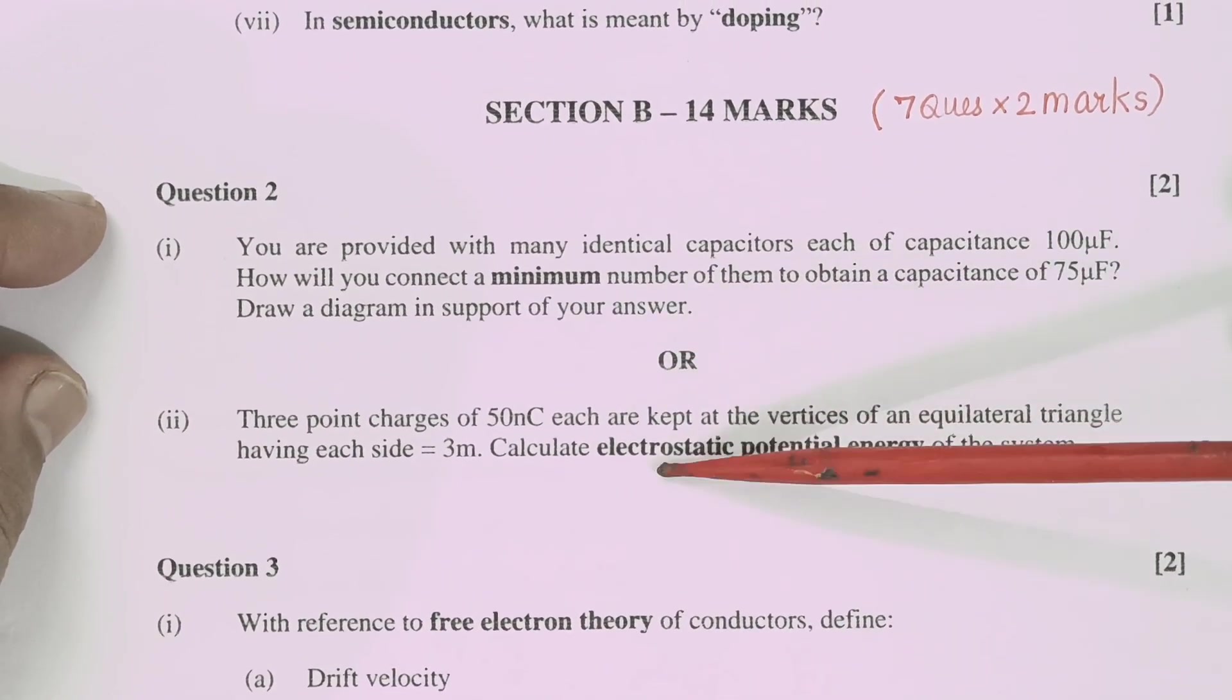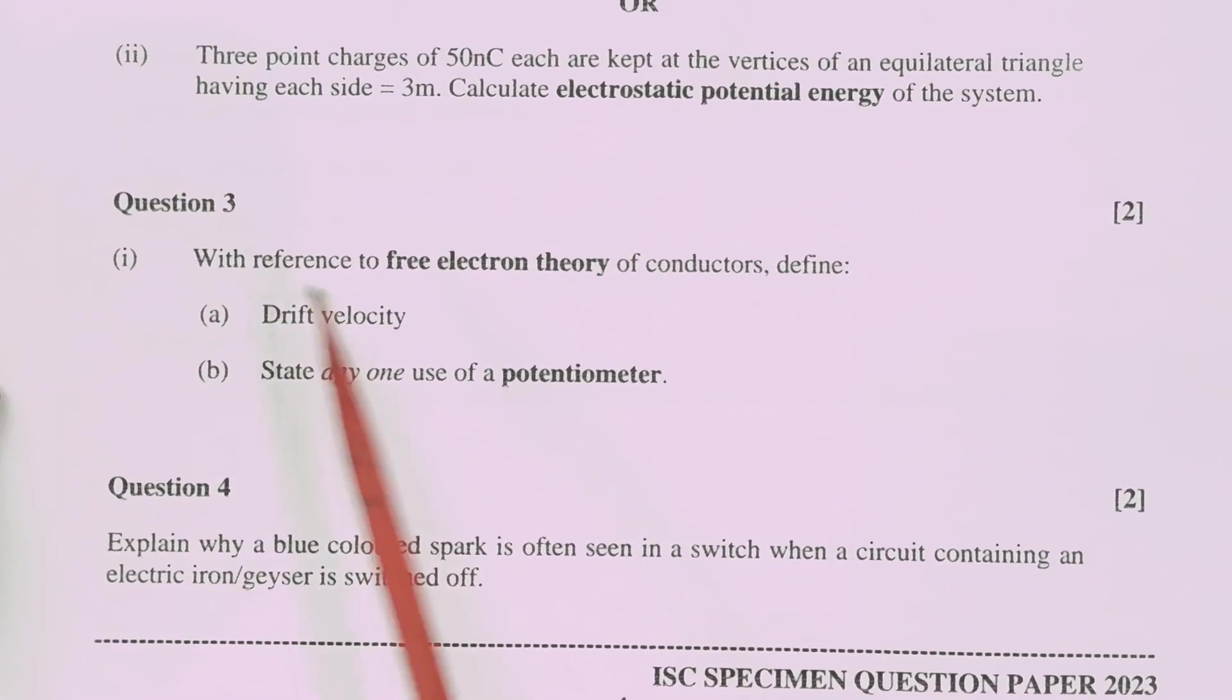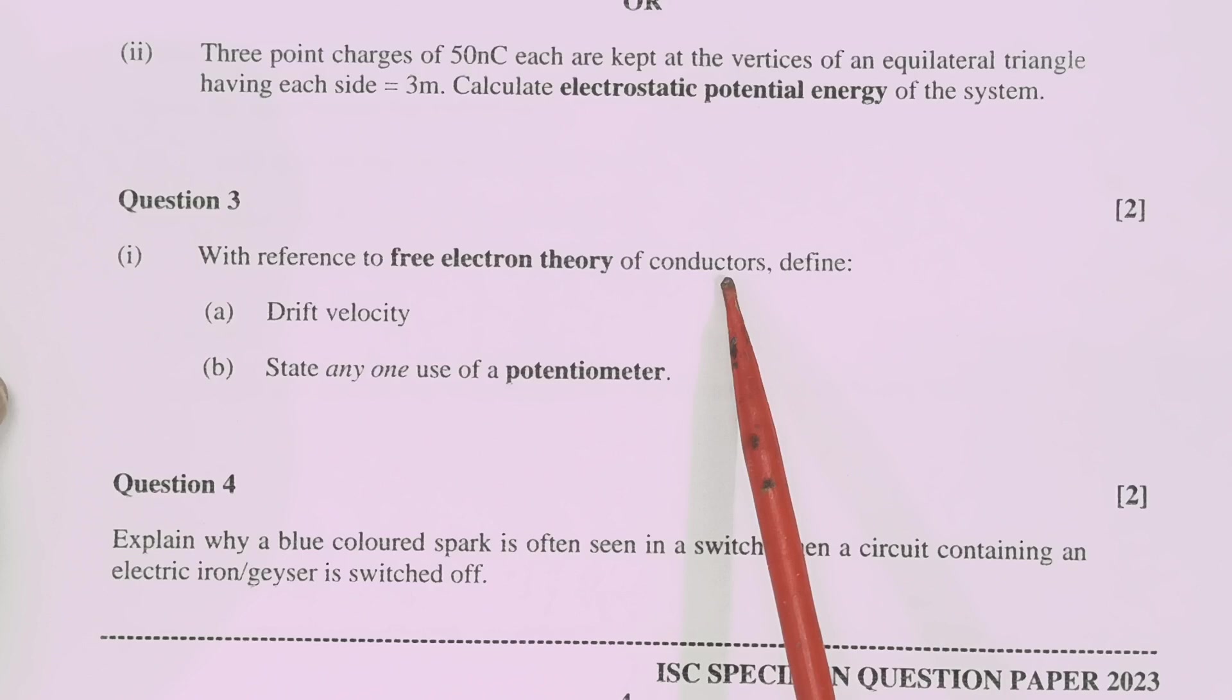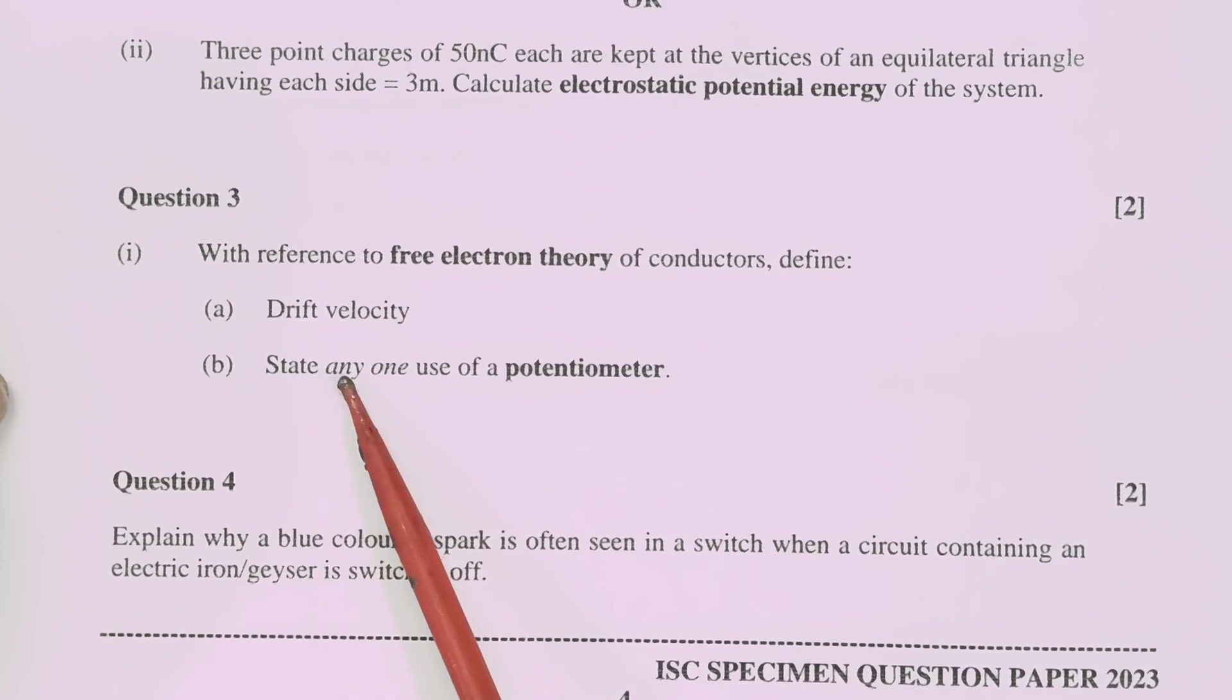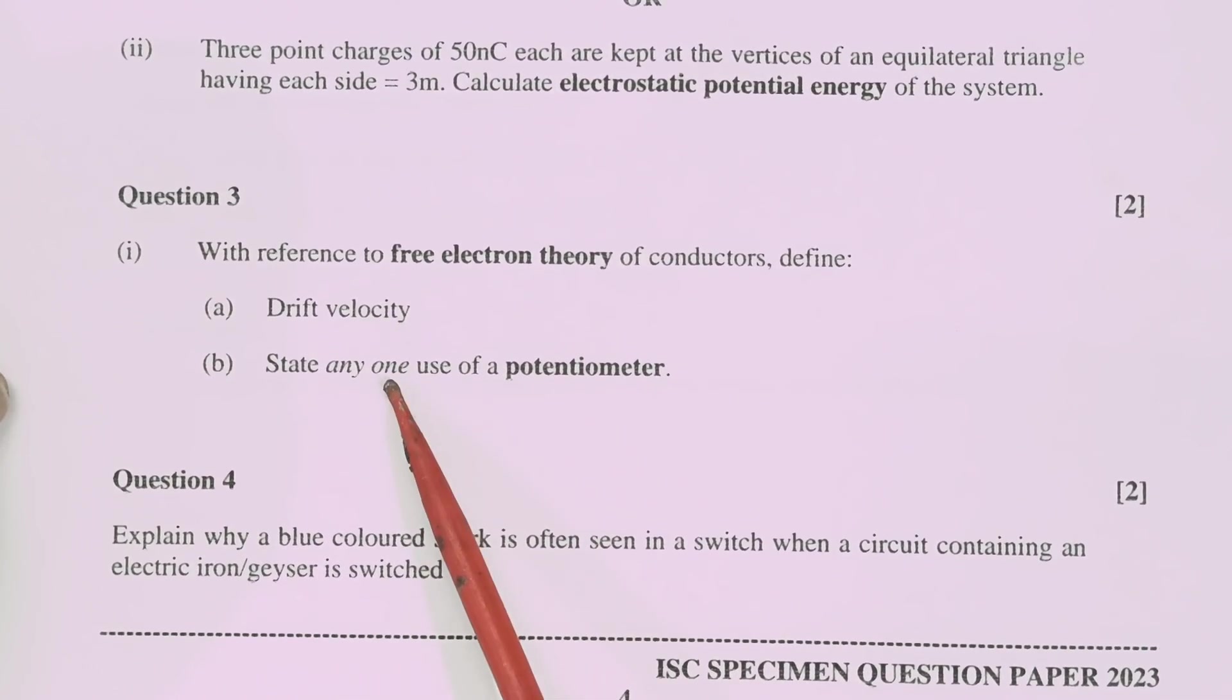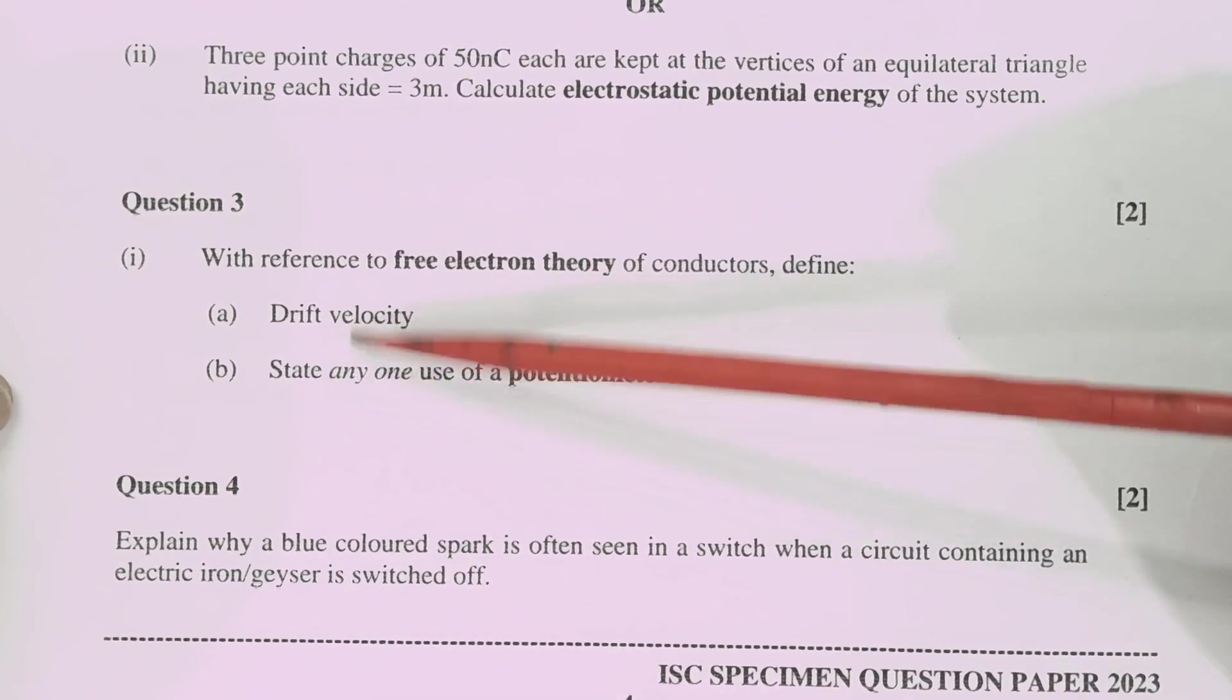So you can see that here you are having choice but from the same topic. Then again here observe with reference to free electron theory of conductor define and you need to define drift velocity and state any one use of potentiometer. Two questions, two marks right. So again actually you are having one one mark question.